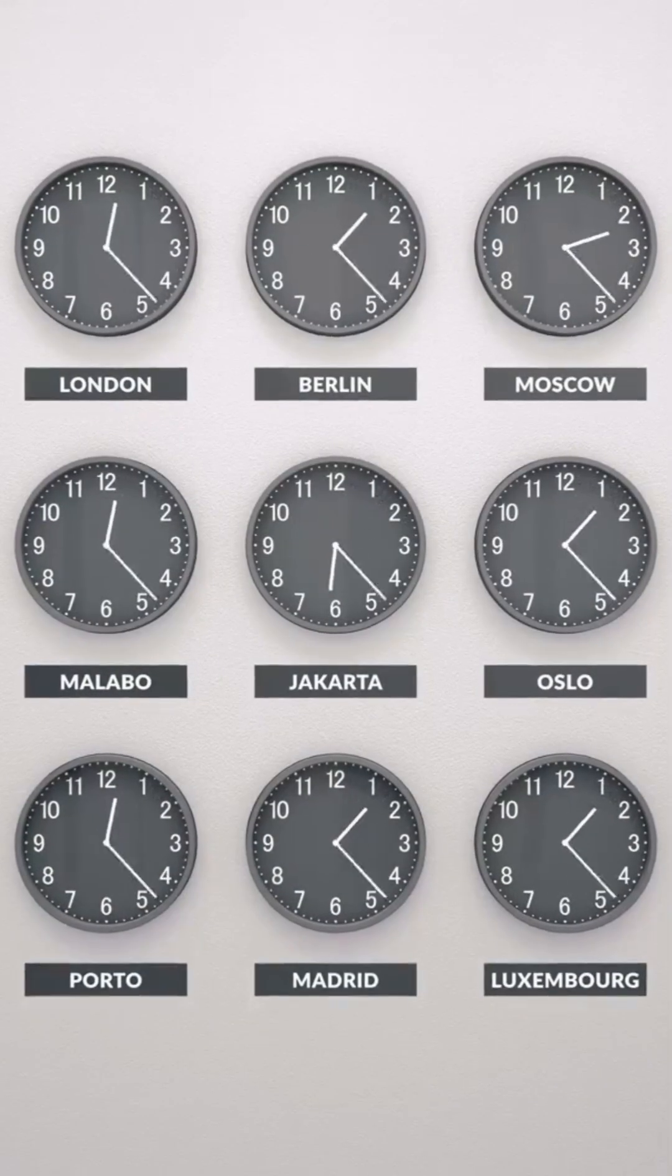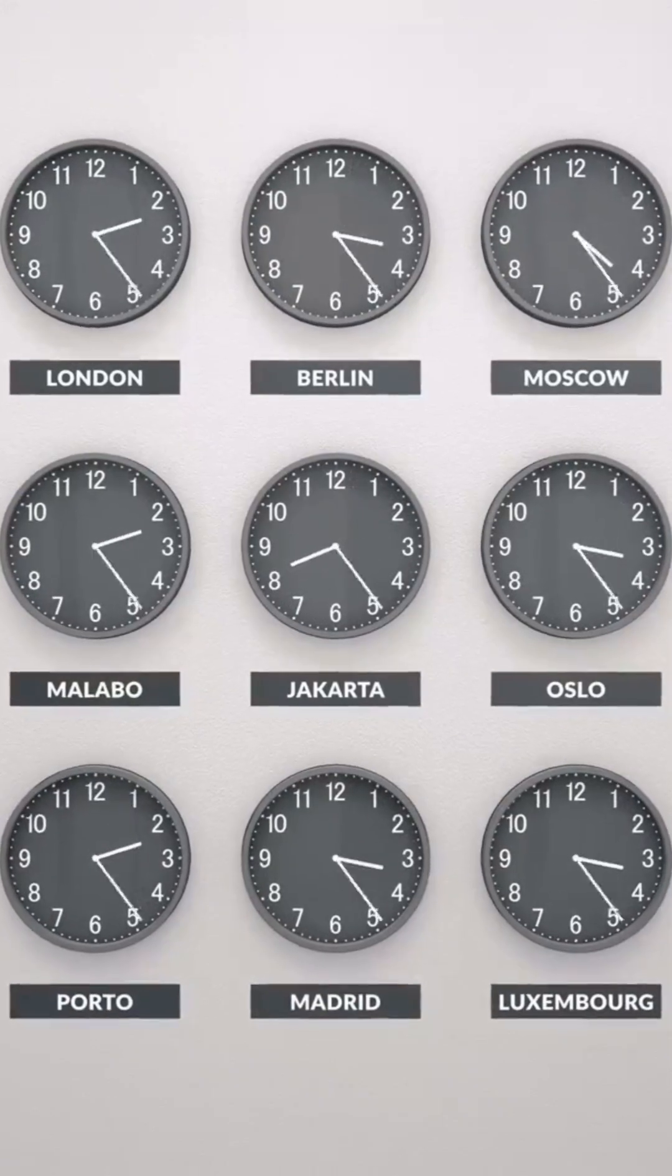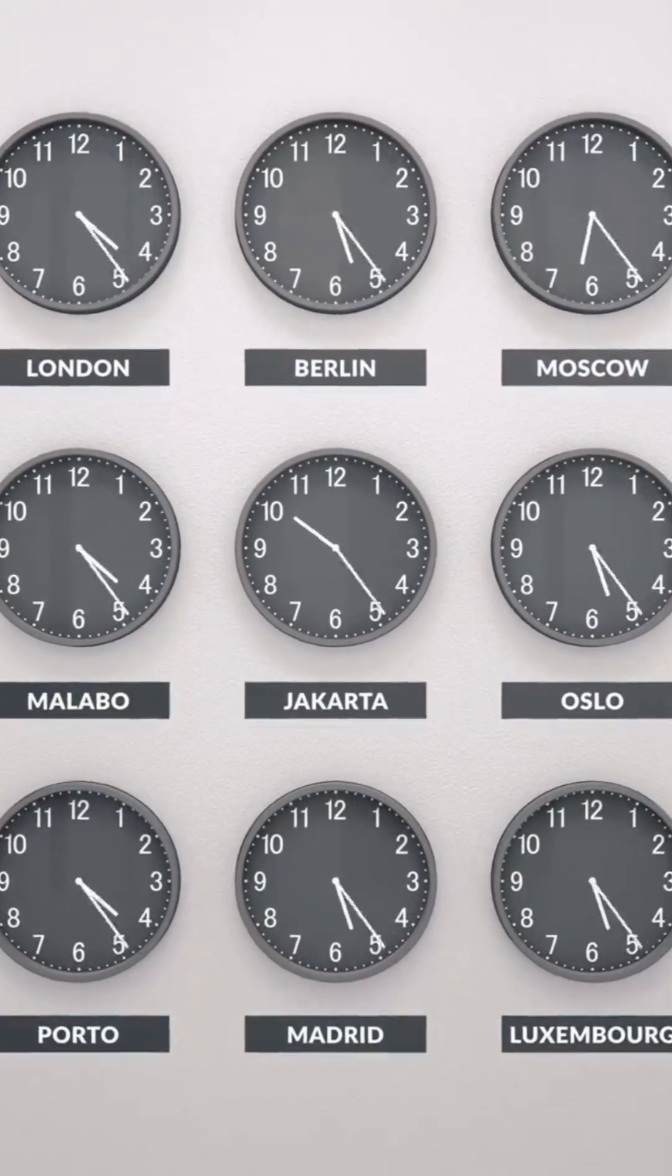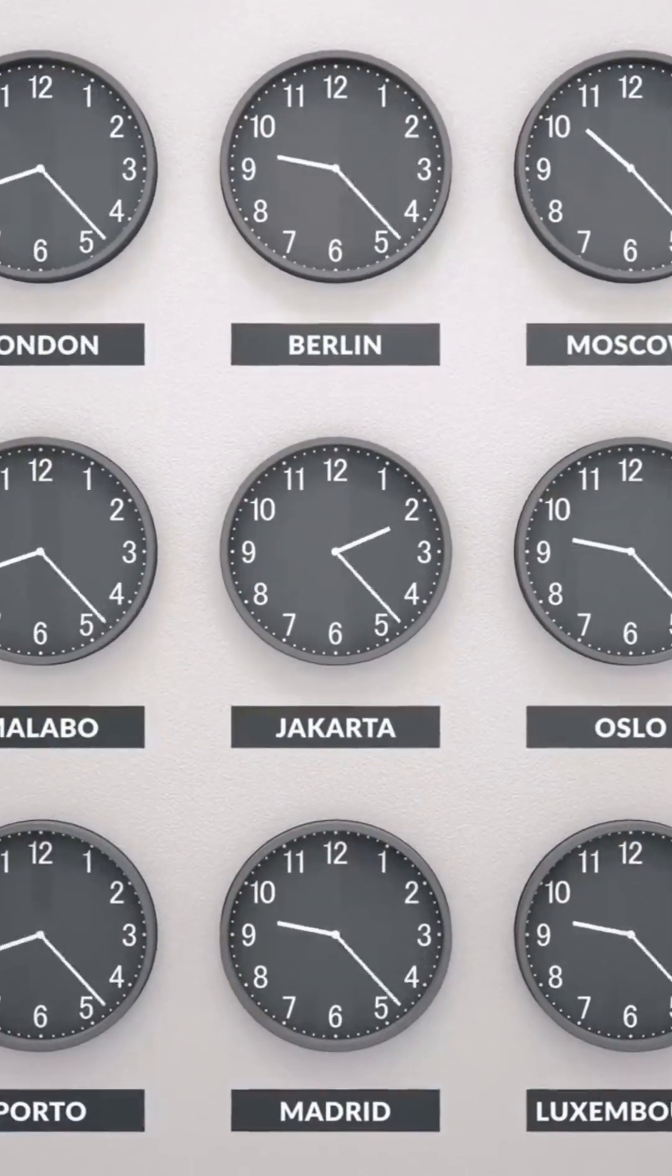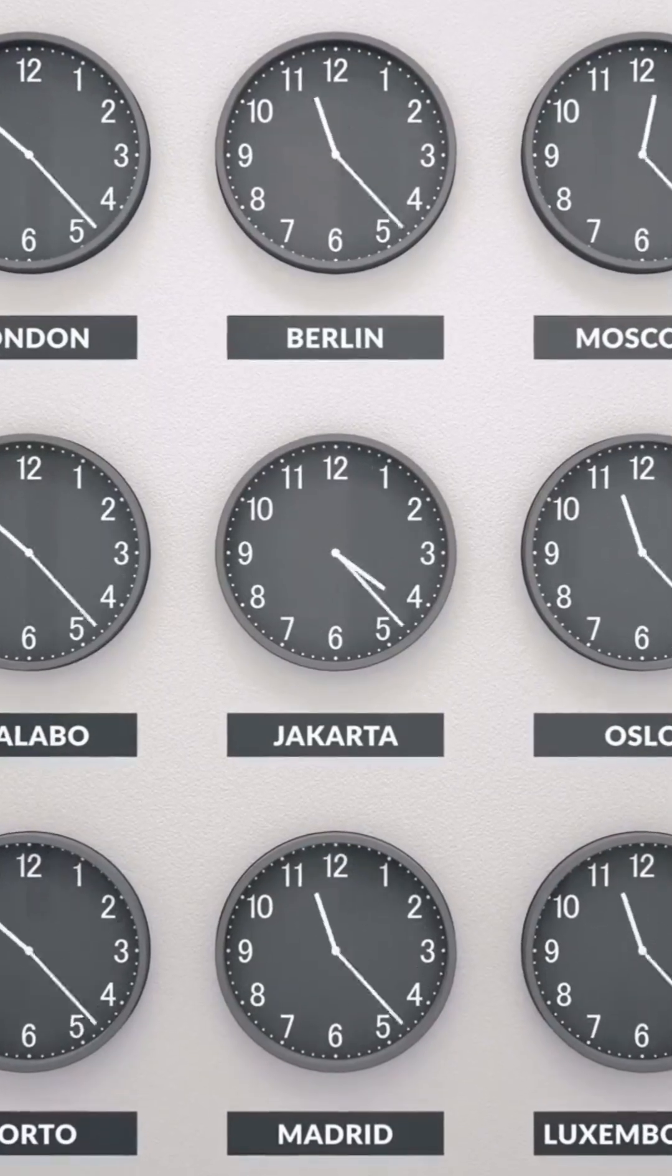Use an array of rubidium-based atomic clocks, synchronized via GPS, to measure minimal temporal deviations. These clocks are incredibly precise and will help you track even the smallest shifts in time.